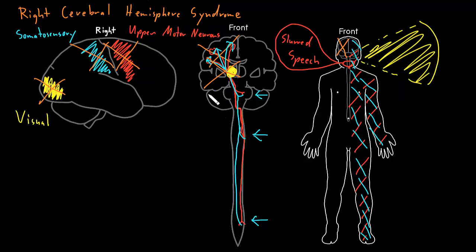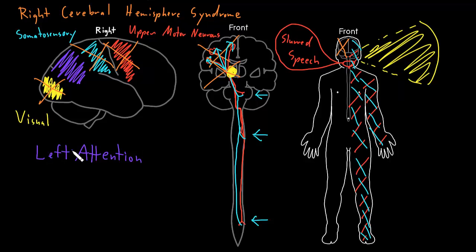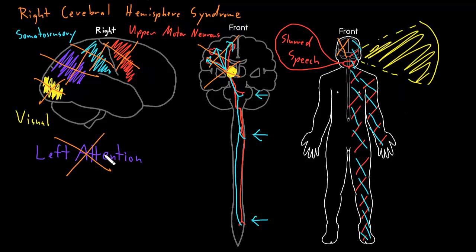We often see a different behavioral problem with right cerebral hemisphere dysfunction, because there appear to be areas in the right cerebral hemisphere that have a lot to do with attention — particularly attention to the left side of the body and environment. The left cerebral hemisphere seems to mostly pay attention to the right side. So with dysfunction of the right hemisphere, the left hemisphere cannot compensate to pay attention to the left side, and a person can lose attention to the left side. We call this hemi-neglect.